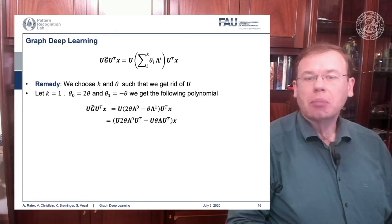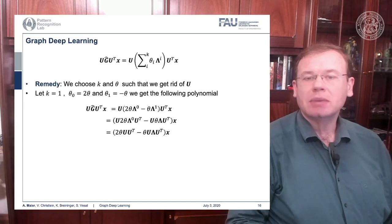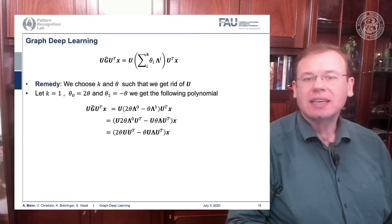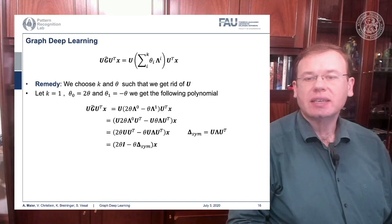We can pull in our U from the left-hand side and the right-hand side. We use the property that theta is a scalar, so we can pull it to the front. Lambda to the power of 0 cancels out because this is essentially just an identity matrix. The U U^T just cancels out, so this is again the identity matrix. We can use our definition of the symmetric version of our graph Laplacian and replace it in our equation.